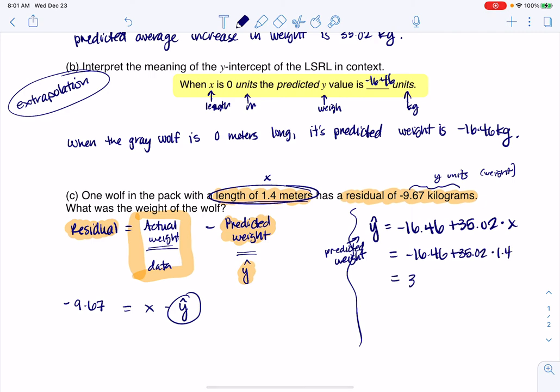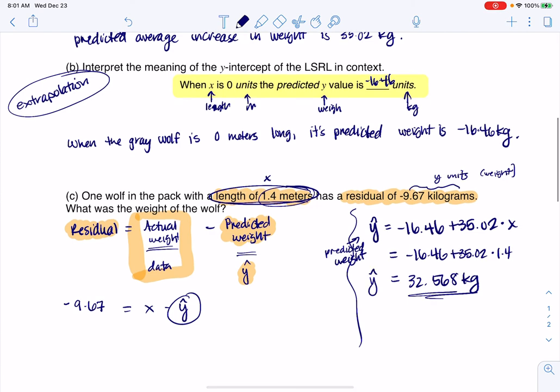When I crunch that number, I'm going to get 32.568 kilograms. Meaning if I have a wolf and I measure this wolf to be 1.4 meters, I'm going to predict that wolf's weight to be 32.568. That is my y hat.